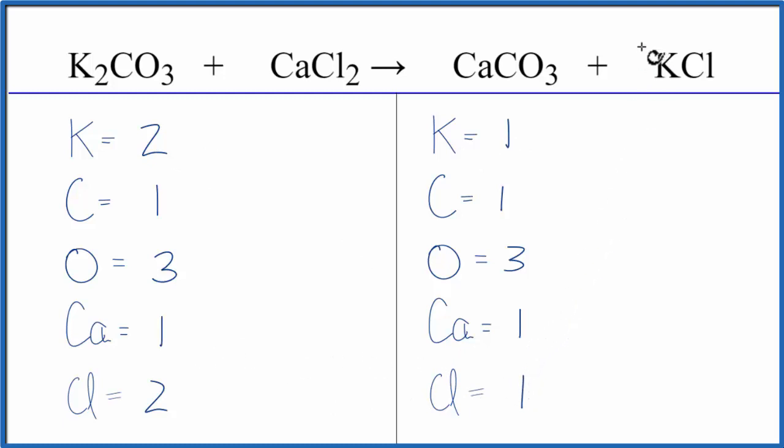Which is actually pretty convenient, because if we put a coefficient of two in front of the KCl, this two applies to everything. The one times the two, that'll give us two potassiums, those are balanced.